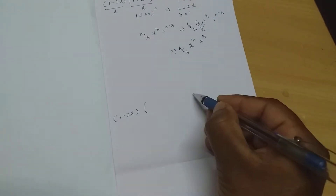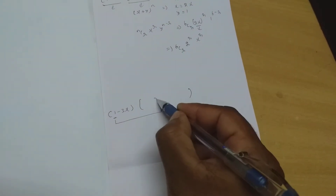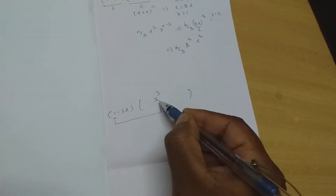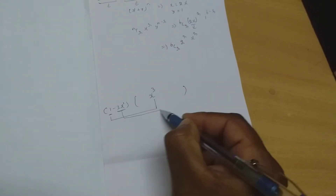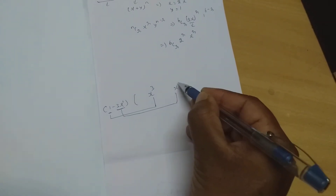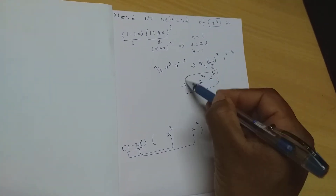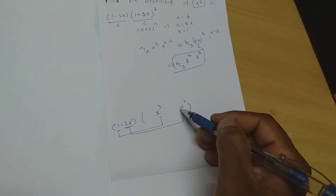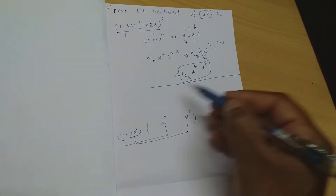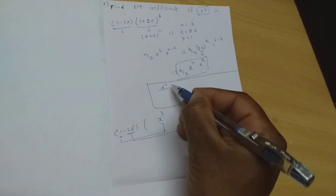Now it is (1 − 3x) multiplied by the expansion. To get the x³ term: 1 should be multiplied with x³ to get x³, and −3x · x² also gives x³. So from the general term I need to find the coefficients for x³ and x². To get the x² coefficient, r should be 2.